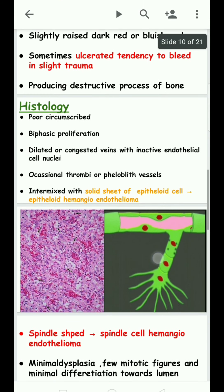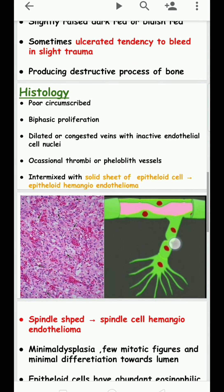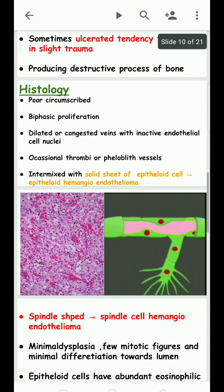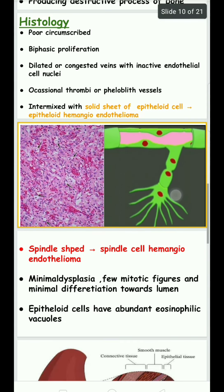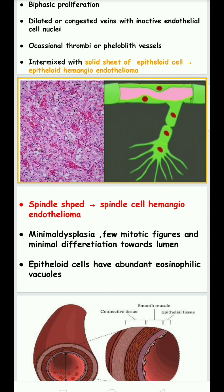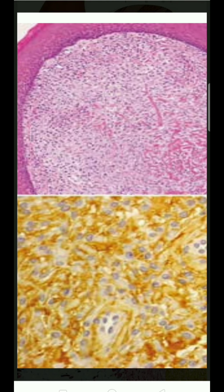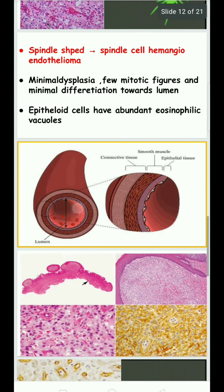The endothelial cells proliferate and form solid sheets. When they resemble epithelial cells, the lesion is called epithelial hemangioendothelioma; when they resemble spindle cells, it is called spindle cell hemangioendothelioma. There is minimal dysplasia and few mitotic figures, with minimal differentiation toward the lumen. Few mitotic figures can be seen within the lumen area.